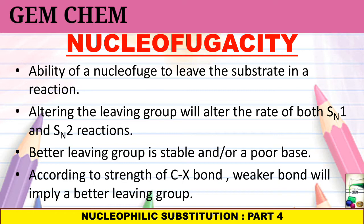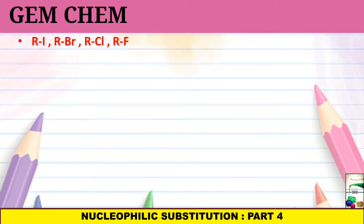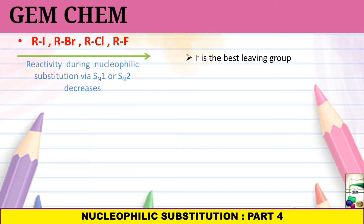Now we will see an example of a good leaving group. If you consider RI, RBr, RCl and RF, from here only we can conclude that I- is better or good leaving group. Why? Because it is bulkier in size and the negative charge is dispersed throughout. As a result, when it leaves the RI, it becomes stabilized on its own. Whereas the C-I bond is the weakest among the following series. So, we can finally write that reactivity during nucleophilic substitution via SN1 or SN2 decreases from RI to RBr to RCl to RF.